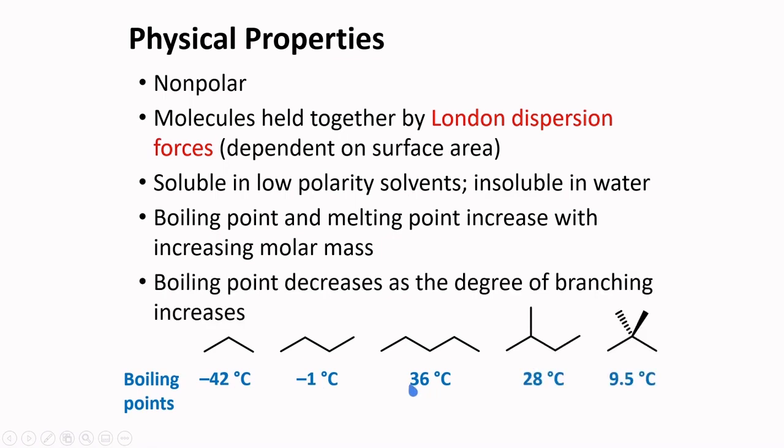Boiling point decreases as the degree of branching increases. If we compare the different 5-carbon alkanes, here is pentane, 2-methylbutane, and 2,2-dimethylpropane.